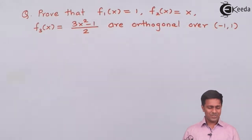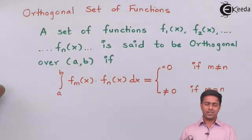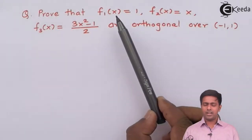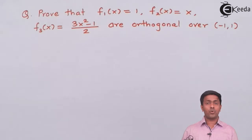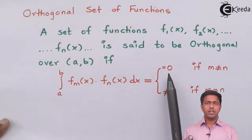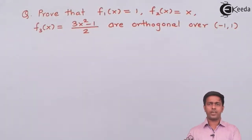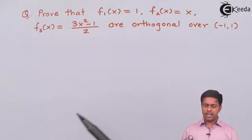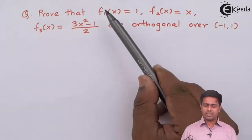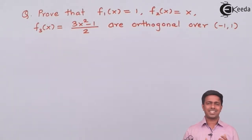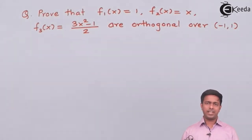When we say fm(x)·fn(x), it means we take two different functions. We will take f1(x)·f2(x), multiply them, find the integration, and prove it equals 0. For the second condition, we take f1(x) multiplied with itself and prove it is not equal to 0, then f2(x) with itself, and so on. Since there are three functions, we have to cover a total of six conditions, and only then can we say these three functions are orthogonal over minus 1 to 1.